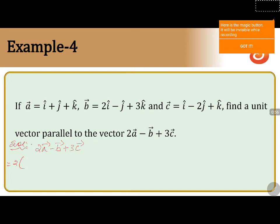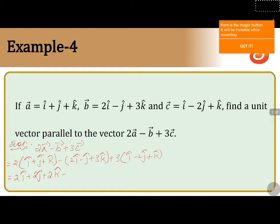2a vector minus b vector plus 3c vector equals 2 into (i cap plus j cap plus k cap) minus (2i cap minus j cap plus 3k cap) plus 3 into (i cap minus 2j cap plus k cap). Multiplying the first vector by 2 gives 2i cap plus 2j cap plus 2k cap, minus 2i cap plus j cap minus 3k cap.